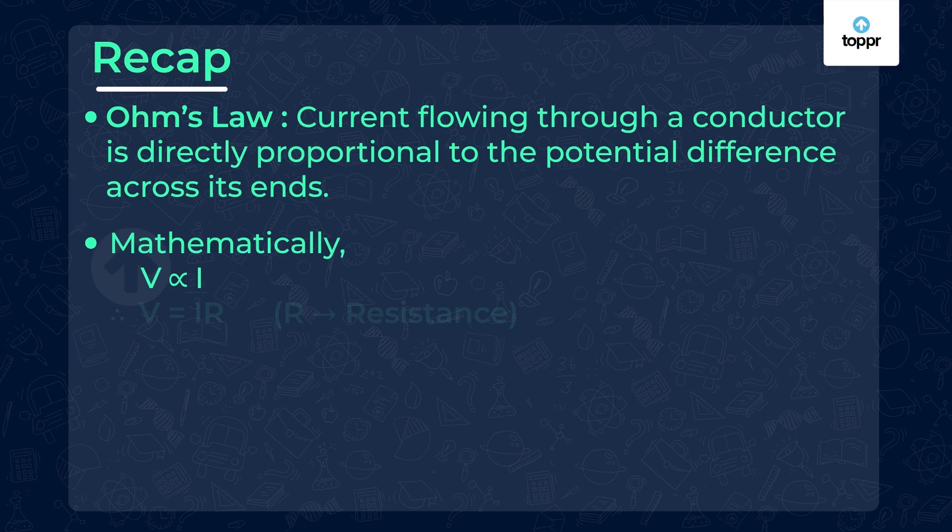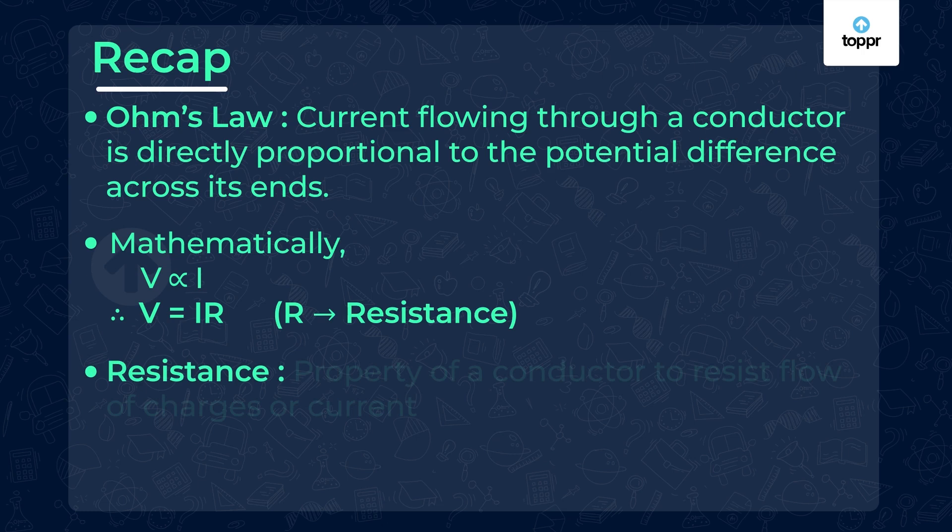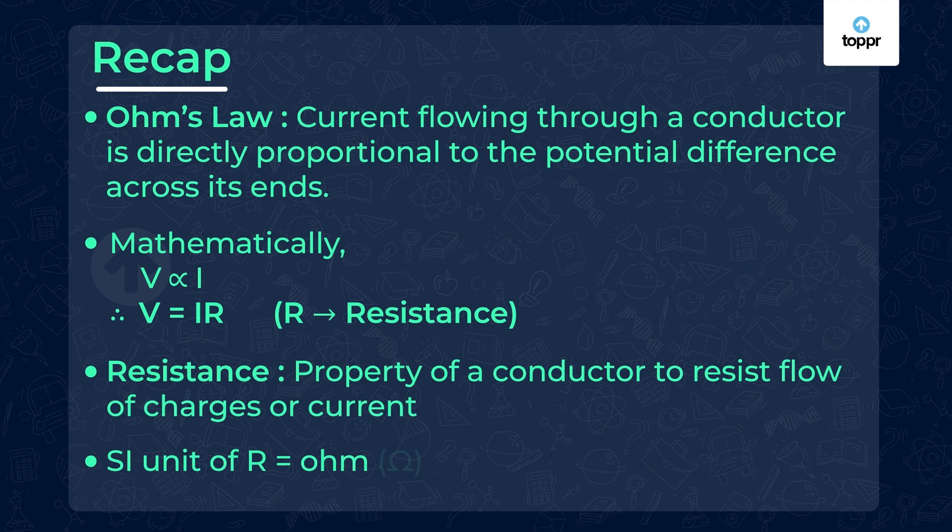From this, we established the formula V equals IR, where R is the resistance of the conductor. We also learned that electric resistance is a property of conductor to resist the flow of charges or current. Its SI unit is called Ohm and it's denoted by Omega.